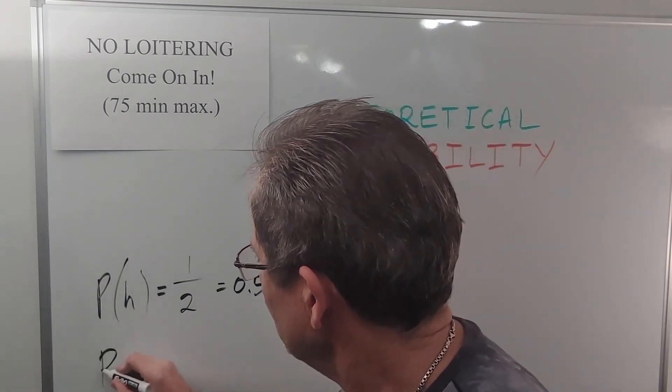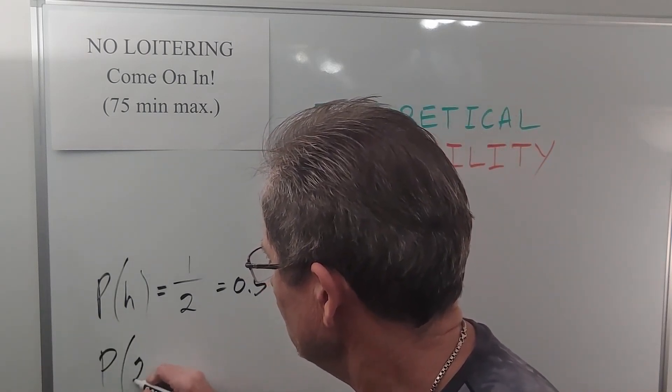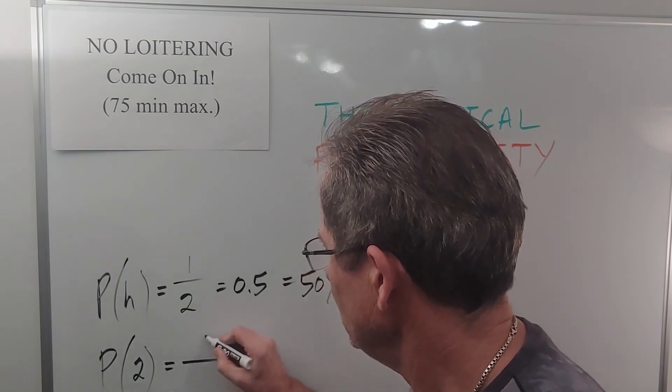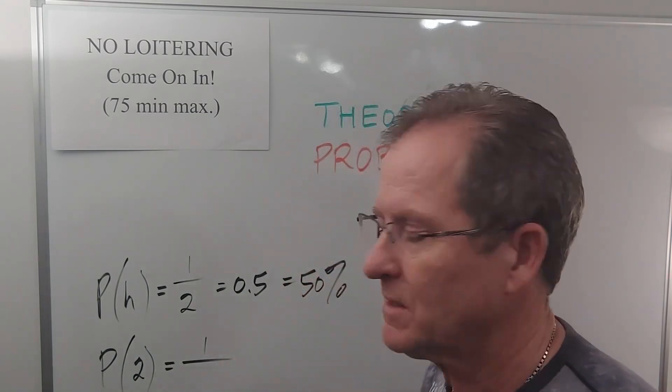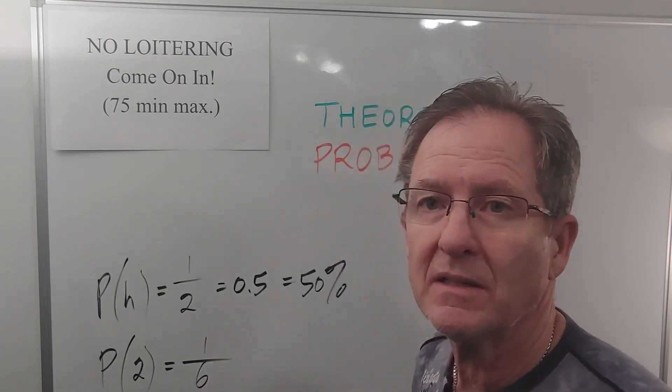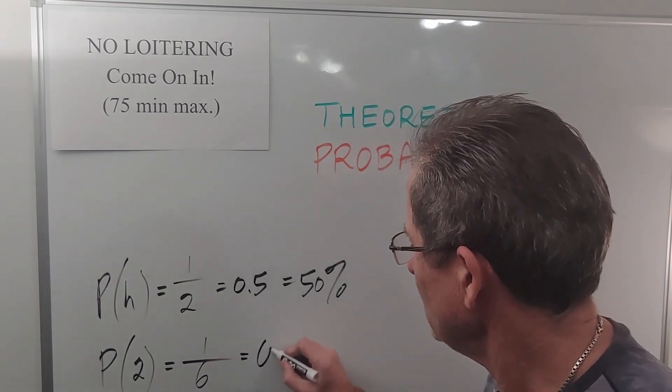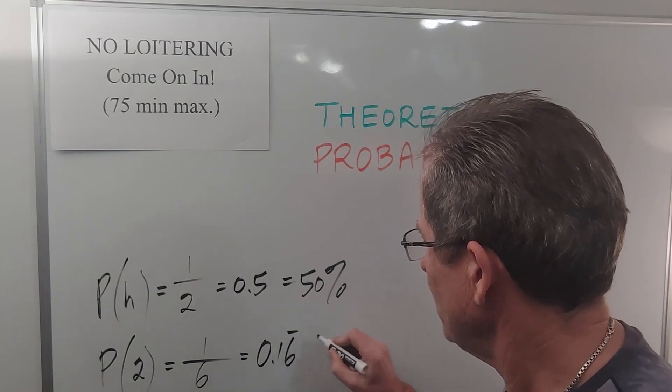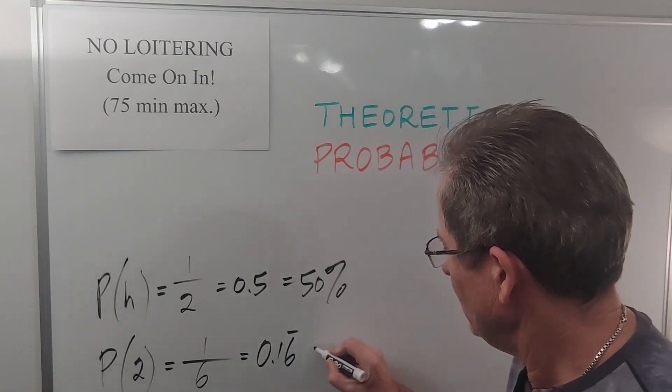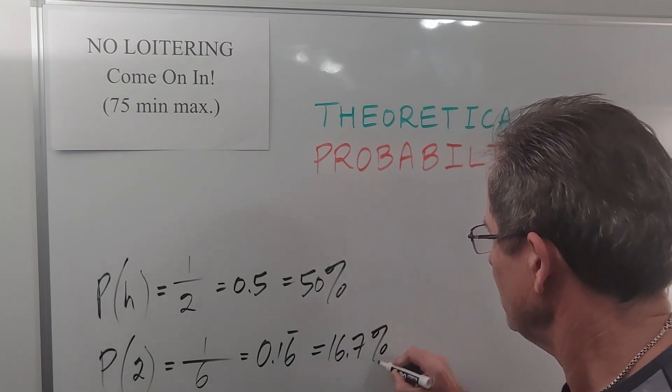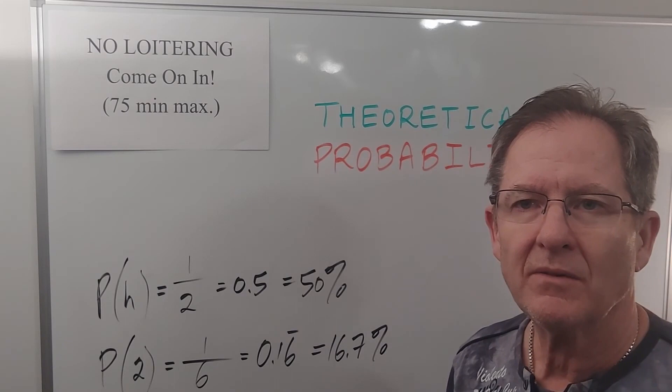What's the probability of getting a 2 on the die? Well, 2 is just one out of six possibilities, so it's 1/6, or 0.16 repeating, or about 16.7%.